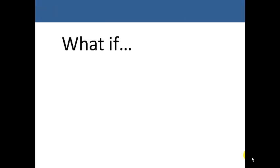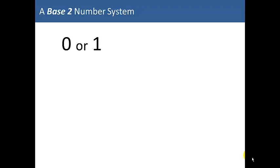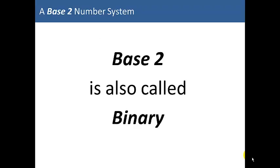Now what if a number system only used two different values, 0 or 1? This would be a base 2 number system. Base 2 is also called binary.